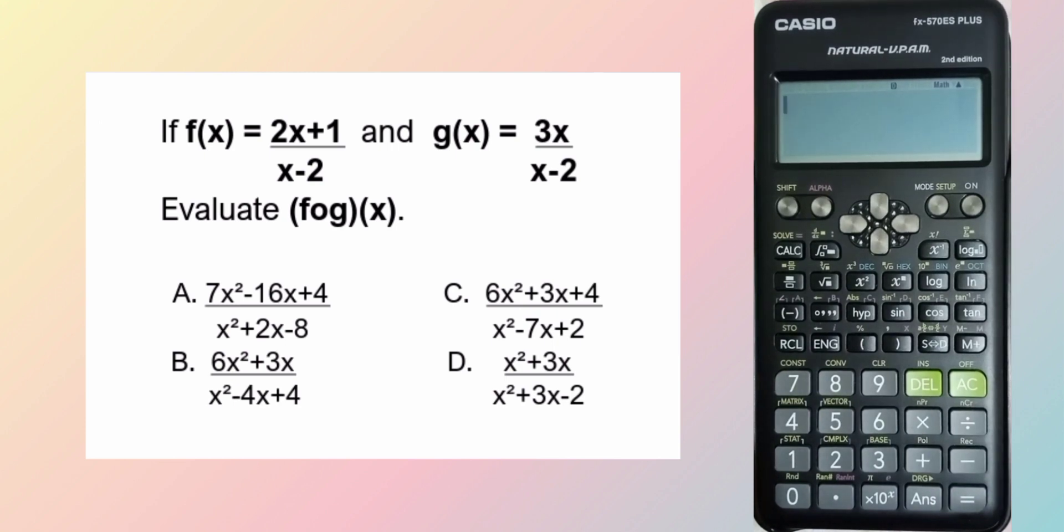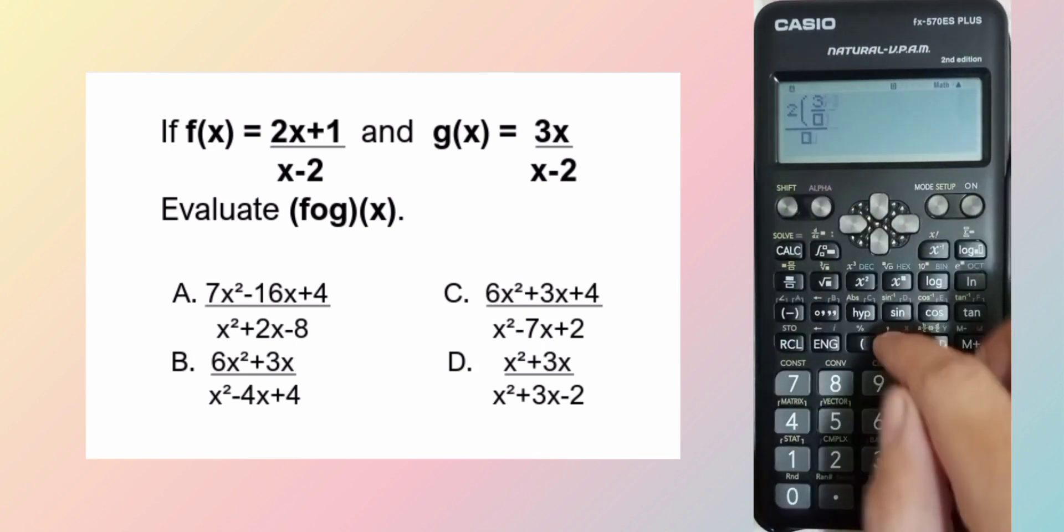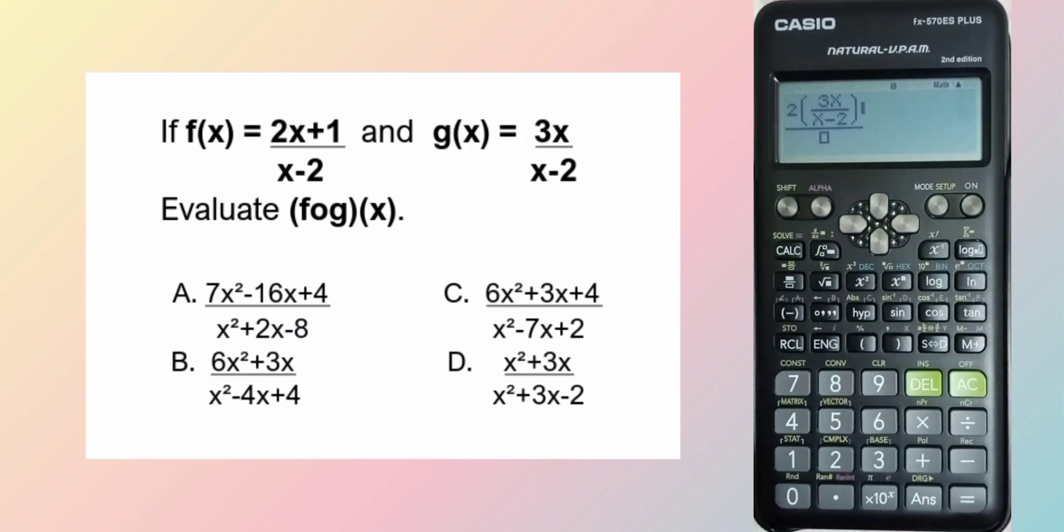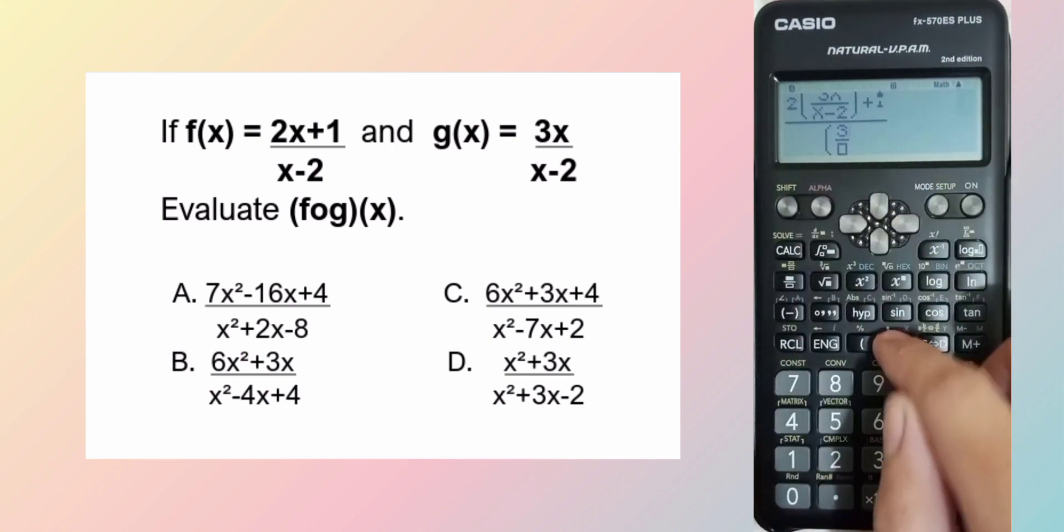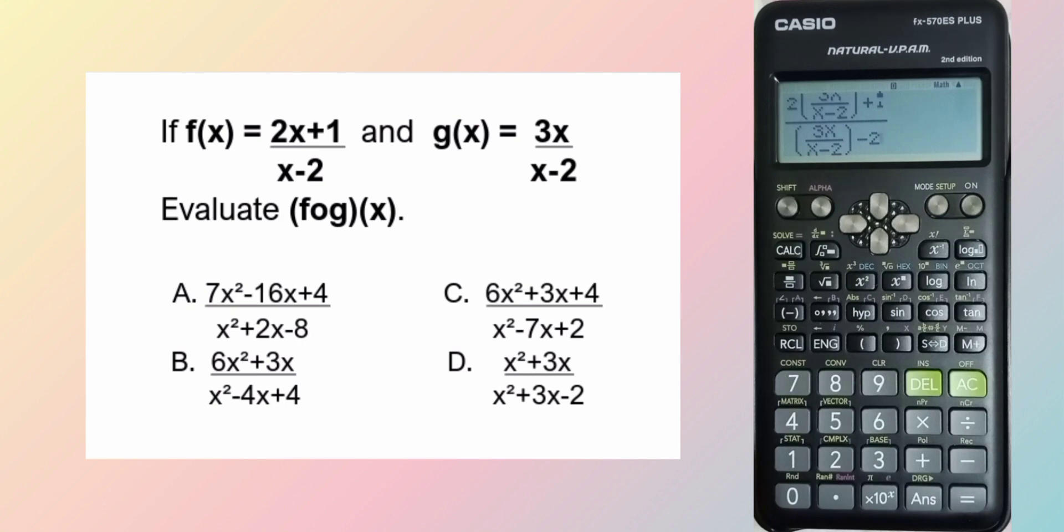The f of x given is equal to 2x. So what will we substitute for x? g of x, which is equal to 3x over x minus 2. This is only for 2x and we still have plus 1 in our numerator. There's more, that's only the numerator, and we also have the denominator. And this x again gets replaced by 3x over x minus 2, and there's minus 2 as well. So this is our f composed of g of x.